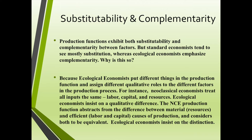Neoclassical economists treat all inputs the same: labor, capital, and resources. Ecological economists insist on a qualitative difference. The neoclassical economic production function abstracts from the difference between material resources and efficient causes of production — labor and capital — and considers both to be absolutely equivalent. Ecological economists insist on a distinction.